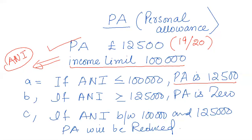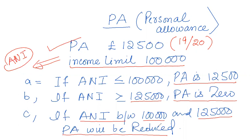If ANI is greater than or equal to £125,000 — for example, £125,000 or more — then personal allowance becomes zero. We have to calculate personal allowance when ANI is between £100,000 and £125,000; in that range, the personal allowance will be reduced and we must compute it. For example, if ANI is £110,000, a reduced personal allowance is available, but if ANI is £130,000, personal allowance will be zero.